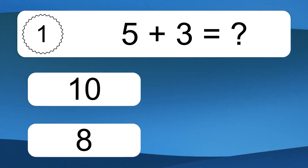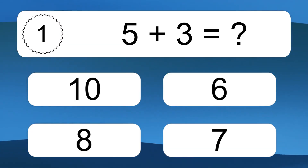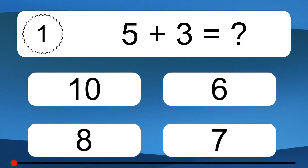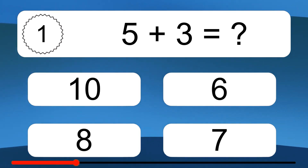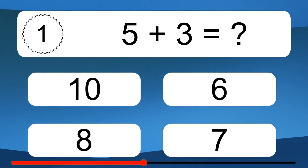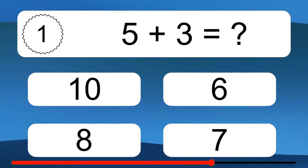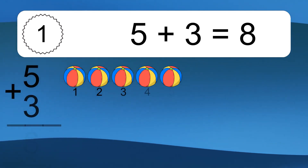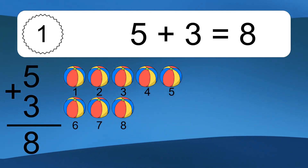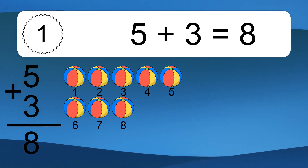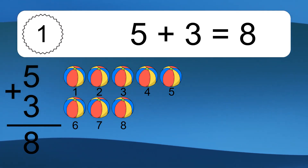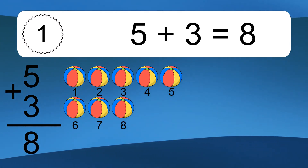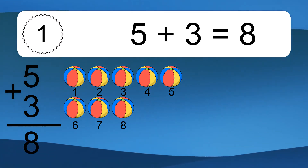5 plus 3 equals what? 5 plus 3 equals 8. Let's count it. 1, 2, 3, 4, 5, 6, 7, 8.